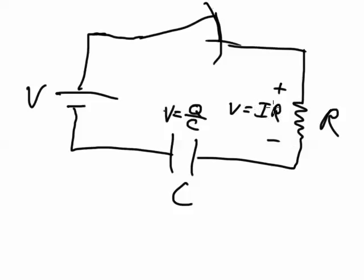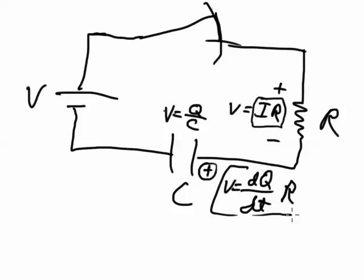First of all, this I times R is going to be changing during the time, and actually the charge that is accumulating right here is going to be based on the current coming through there, which is going to be equal to the change in the charge divided by the time. So this thing over here, V equals IR, is going to be V equals R times dQ dt.